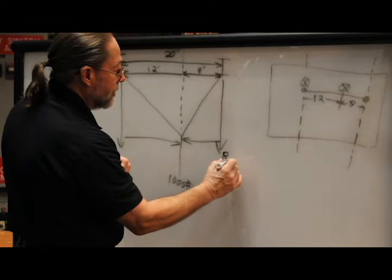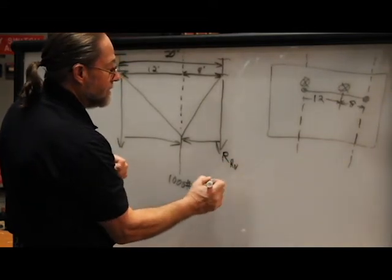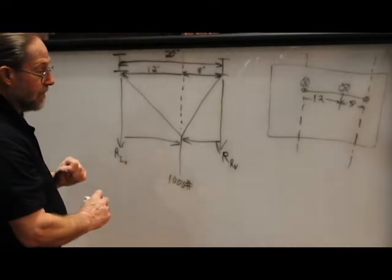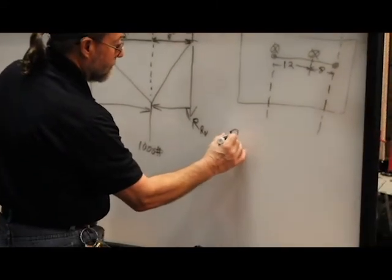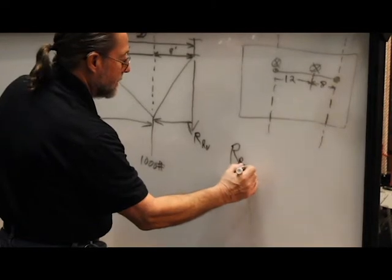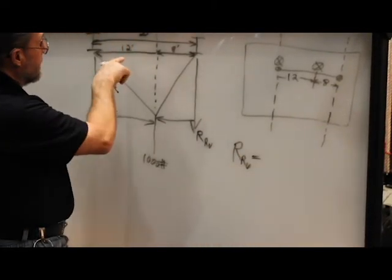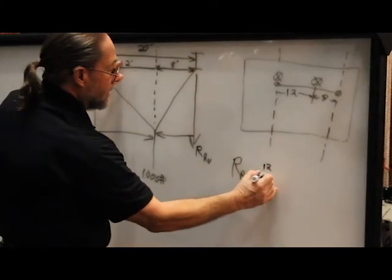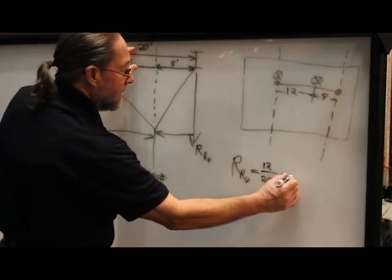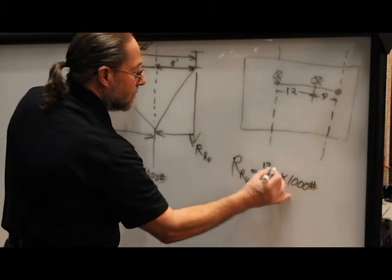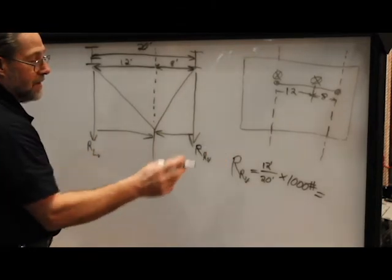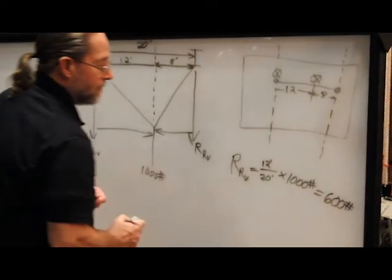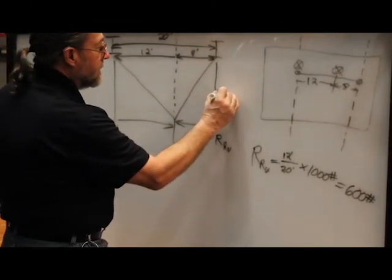Let's call the vertical load on the right side the reaction on the right, and the vertical load on the left side the reaction on the left. The reaction on the right is going to be a function of these distances. We're closer to this side, but it's going to be 12 divided by 20, times the thousand pounds. 12 twentieths is 3 fifths, so it's going to be 600 pounds. So this side, the vertical component, is going to be 600 pounds.